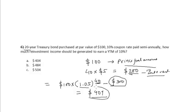Hence the reinvestment income should be $404. So the correct option is option A.